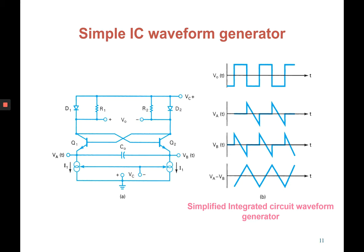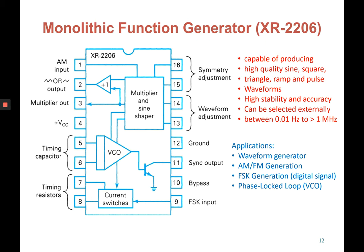This is the simplified circuit for the IC used in a waveform generator, where the waveform generator manages to produce output as either rectangular/pulse, triangle, or ramp waveforms. One example of an IC or LSI oscillator is the monolithic function generator with model number XR2206. It has 16 pins and inside the IC we have a VCO, current switches, and a wave shaper. This type of IC is capable of producing high quality sine, square, triangle, ramp, and pulse waveforms with high stability and high accuracy.